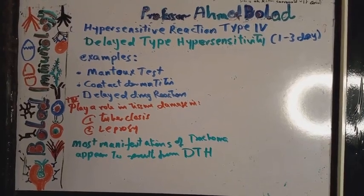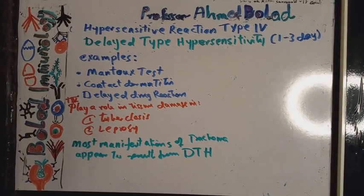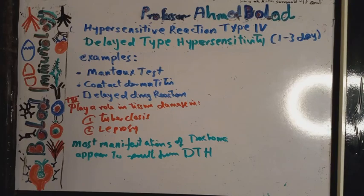In today's lecture, I'm going to talk about hypersensitivity reaction type 4. It is often referred to as delayed type hypersensitivity, as the response may appear during the period between one and three days.